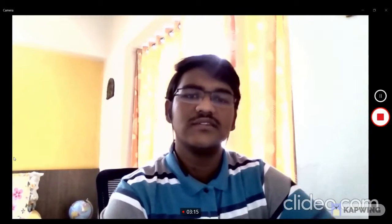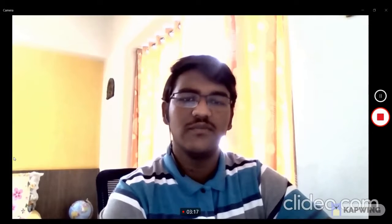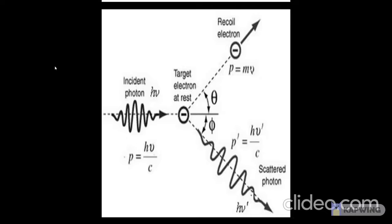Now in the slides we will see the derivation for the Compton effect formula. From this slide we can see that the incident photon having energy h nu and momentum h nu by c collides with an electron at rest. After the collision, an electron and a photon emerge at different angles from the incident photon.